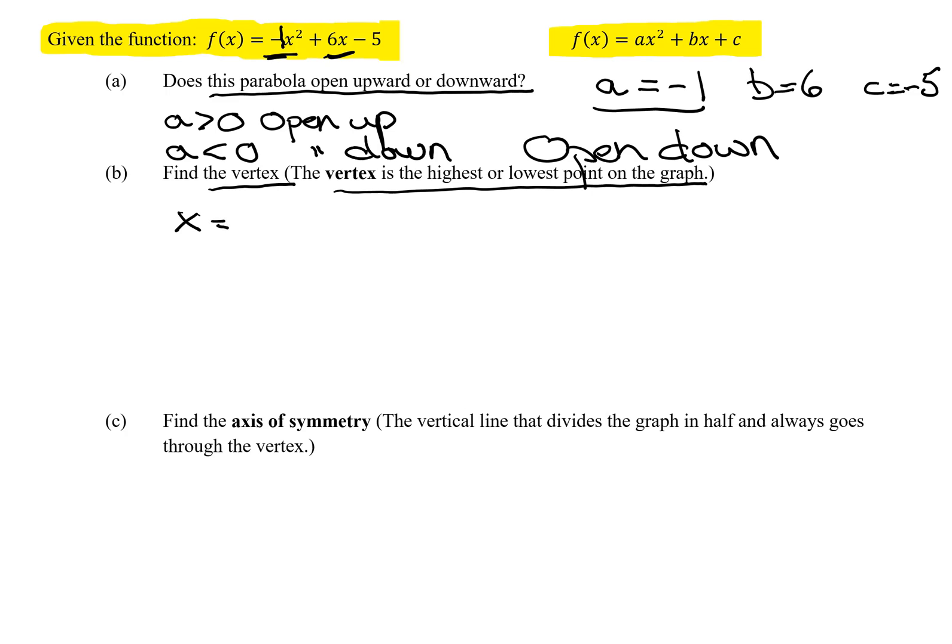And it's x equals negative b over 2a. That will give us the x value of the vertex. So let's plug our numbers in. So it's the opposite of what is b. b is 6.